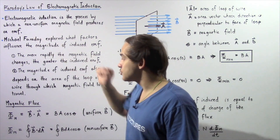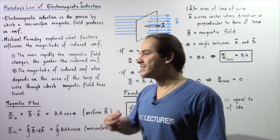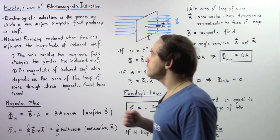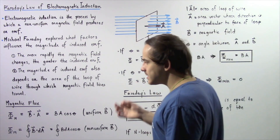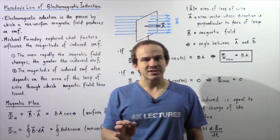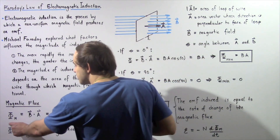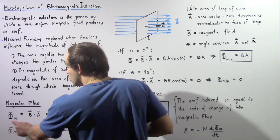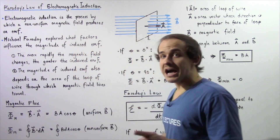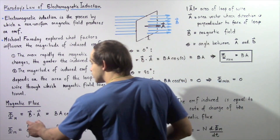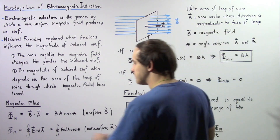Before we state Faraday's Law, let's define the concept known as magnetic flux, which is used to define Faraday's Law of Electromagnetic Induction. In the same way that we were able to define electric flux, magnetic flux also exists. It is given by the Greek symbol phi with the subscript M, which stands for magnetic. The magnetic flux is equal to the dot product of two vectors: the magnetic field vector and our area vector.